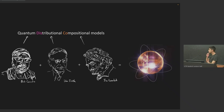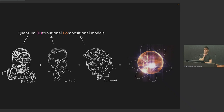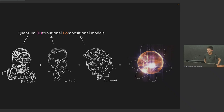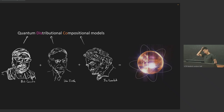I have here Bob, John Firth, and Jim Lambeck, and each one has contributed a specific idea. If you get these three ideas you get quantum distributional compositional models. Quantum is from Bob; distributional is from John Firth, who says you shall know the meaning of a word by the company it keeps — basically, create word embeddings from large text by counting how words occur in each other's contexts. Jim Lambeck said: I love algebra, so I will make a grammar model based on algebra.